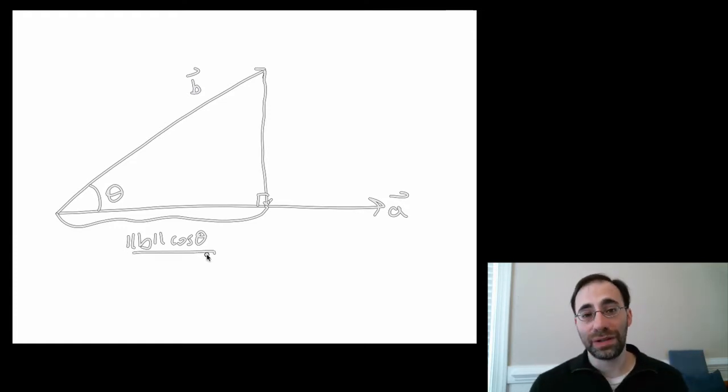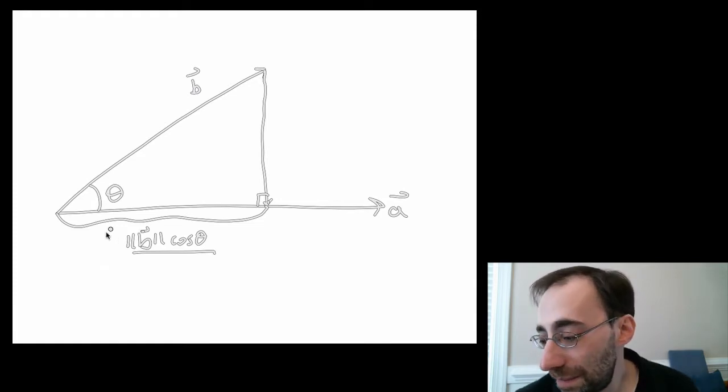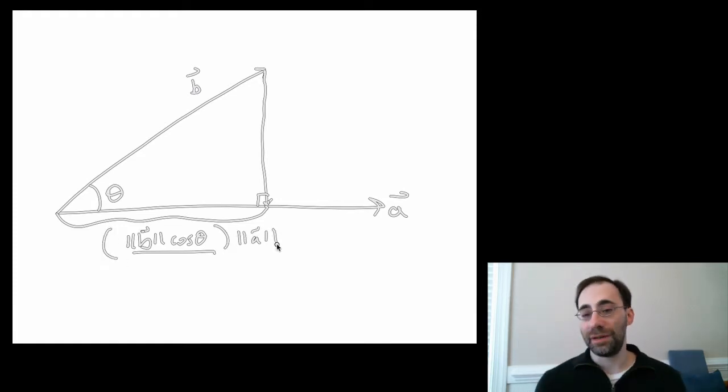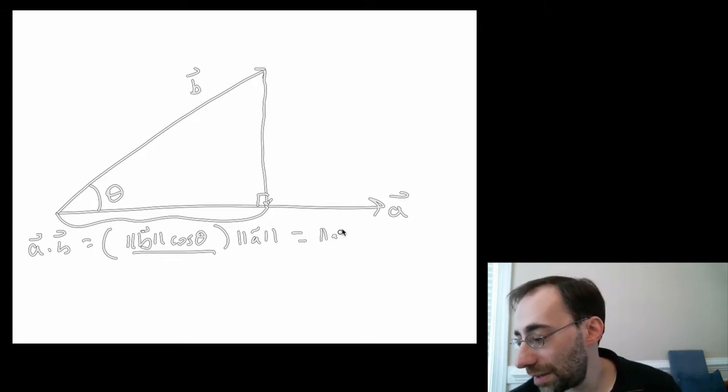Now it turns out this same argument applies whether or not a is horizontal. You could rotate the entire thing this way. It would still be just fine. If theta is the angle between the two vectors a and b when placed tail to tail, then the dot product ends up being the part of the one vector that's in the same line as the other vector, b cosine theta, where this double line, remember that's the length of b, the norm of b, times the vector a itself, the norm of the vector a itself.